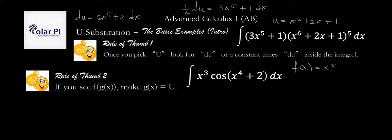In this example rule of thumb number 1 alone could possibly mislead you to think that u should be simply x to the fourth. That's because du would then be 4x to the third dx. And notice that we have x to the third and then dx. The only thing that we're missing from our du is the 4.